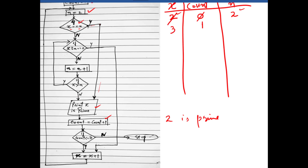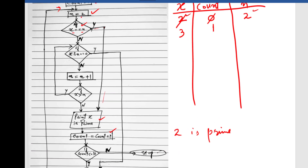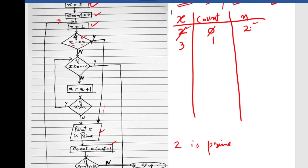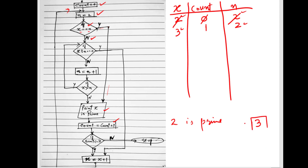With x now 3, I move back in the loop and n is re-initialized to 2. In the decision box, I check if x equals n — 3 does not equal 2, so I move to the 'no' branch. Then I check x % n: 3 % 2 gives a remainder of 1.